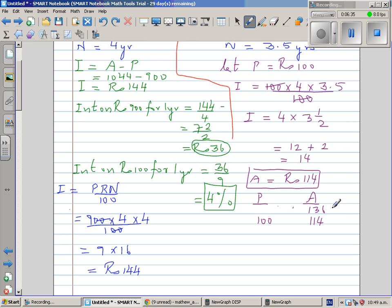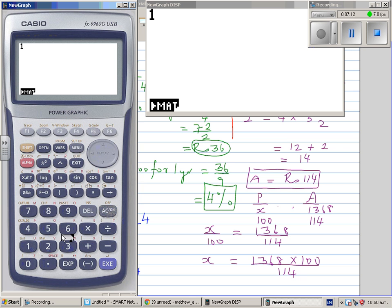So let's say x is the principle that we want to find. I can say x over 100 is equal to 1368 over 114. Now multiplying both sides by 100, your x, which is the principle that we want, is 1368 times 100 divided by 114. So now I'll use my calculator. So it's 1368 times 100 divided by 114. That's 1200 rupees.